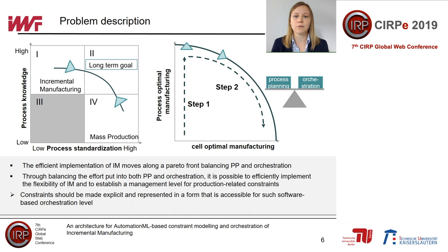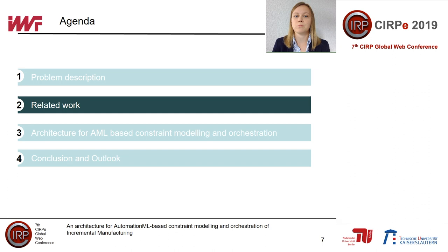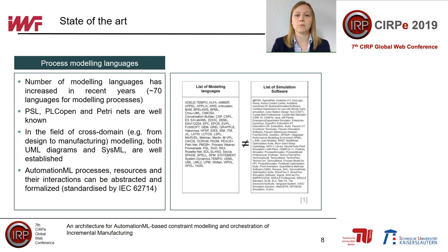To make this possible, we need to set up an explicit representation of constraints to efficiently implement an orchestration level and use the flexibility aspects of incremental manufacturing. Today, around 17 different process modeling languages are available. Well-known are PSL, PLC, or Petri nets. For cross modeling from design up to manufacturing, which is important for us, OML and SSML are the most important languages. The huge variety of languages and the missing standardization makes it hard to select a task-specific language.